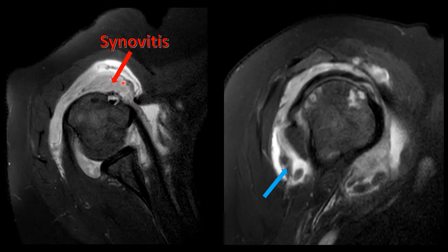The intermediate signal intensity is related to synovitis both in the bursa as well as within the joint. We don't know if this synovitis is acute or active or chronic because there is no contrast in this exam. We also see in the dependent portion of the bursa some bodies — these are rice bodies associated with the extensive synovitis seen in this examination.